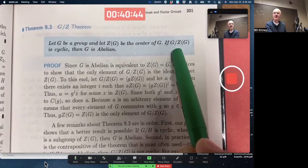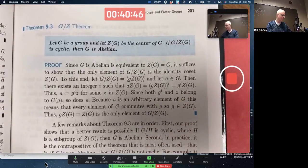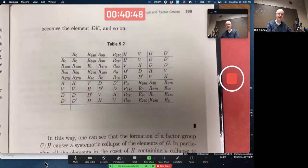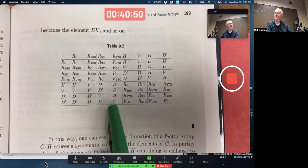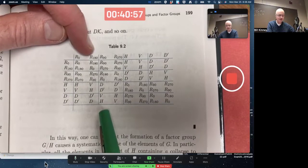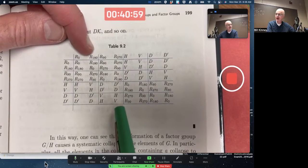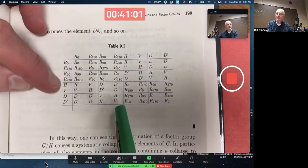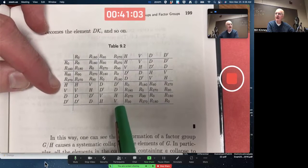But that actually has implications for what we just talked about with regard to this factor group of D4 by R0, R180, which was the center of D4. This can't be a cyclic group. It's got four elements, these four cosets. It can't be cyclic, so it's not isomorphic to Z4.